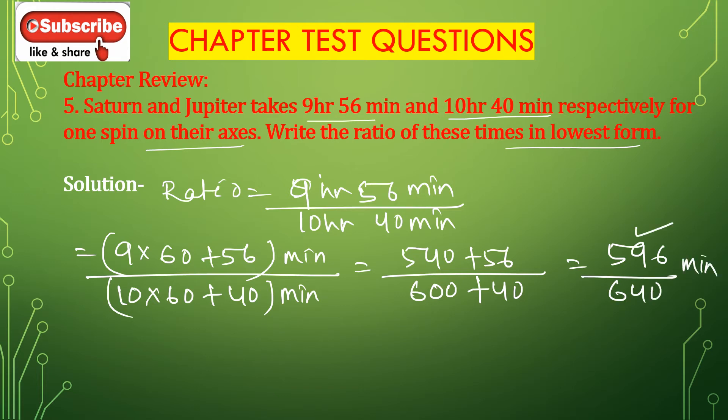Between 596 and 640, 4 is the common factor. So divide the antecedent 596 with 4 and divide the consequent 640 with 4.